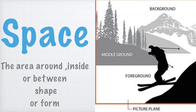Space refers to the area around, inside, or between shapes or forms. As we can see in the slide, it has foreground, middle ground, and background. These three grounds — foreground, middle ground, and background — define depth and composition in an artwork.